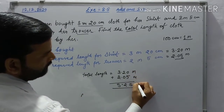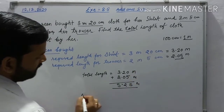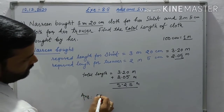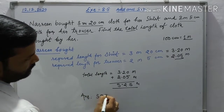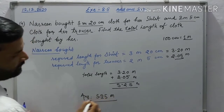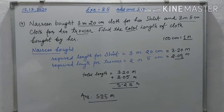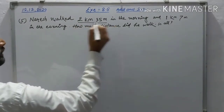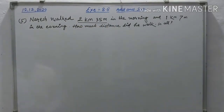Total length is 3.20 plus 2.05. Adding gives 5.25 meter. So the total cloth required is 5.25 meters.